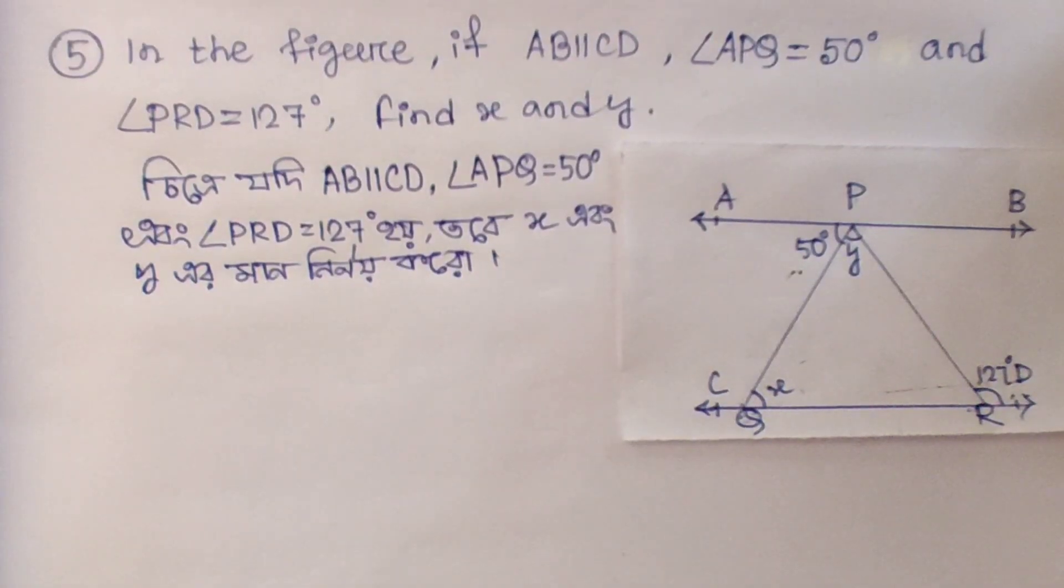Welcome friends, welcome to my channel JMD Smith Class. I want the next question, question number 5. In the figure, if AB parallel to CD, angle APQ equals 50 degrees and angle PRD equals 127 degrees, then find x and y.